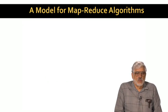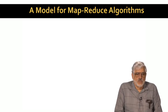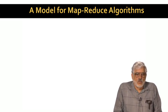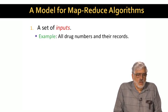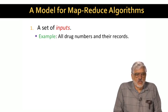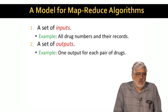We're now going to introduce a model that lets us discuss the best way to trade off communication for the number of reducers used. The elements of the model are simple, but the conclusions are interesting. There is a set of inputs. In the drug interaction example we just talked about, each drug and its megabyte-long record is an input. And there is a set of outputs. The output for a pair of drugs is the conclusion whether there is a statistically significant interaction between those two drugs.